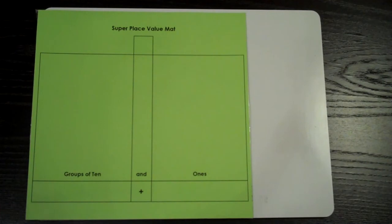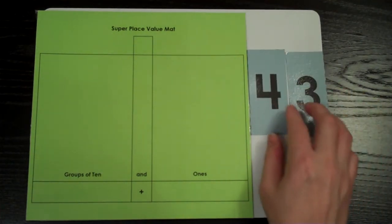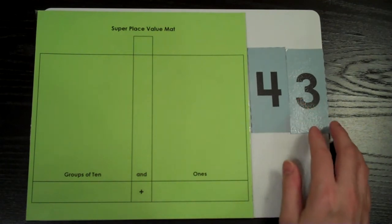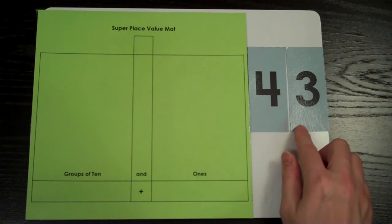For example, the numeral 43 has two digits. It has a 4 in the tens place and a 3 in the ones place.